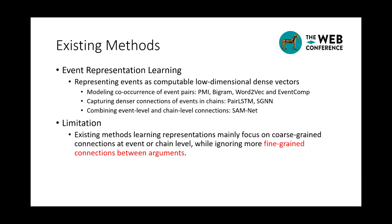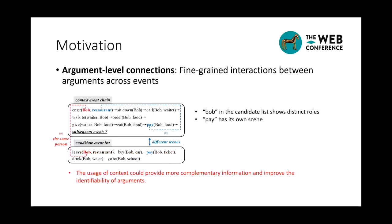However, they usually focus on learning features of event level and chain level, ignoring more fine-grained connections between arguments. We argue that modeling connections between arguments are necessary for prediction.